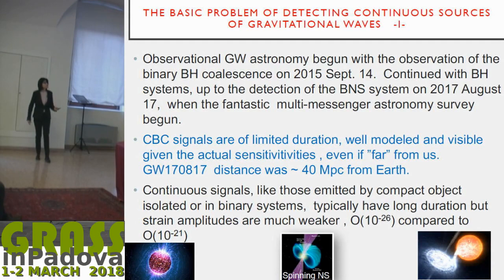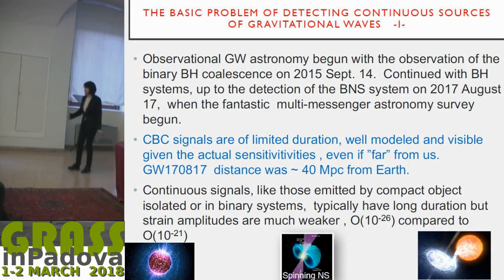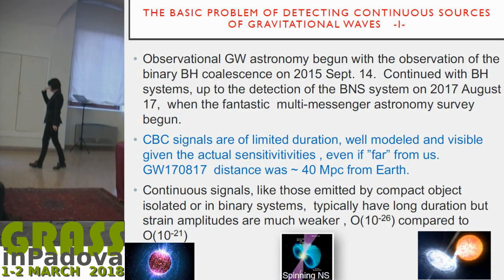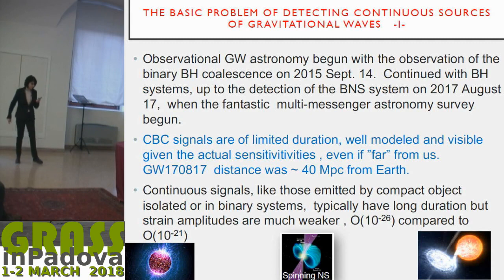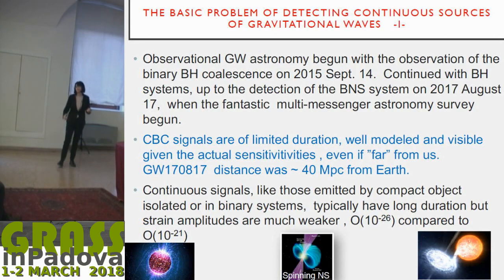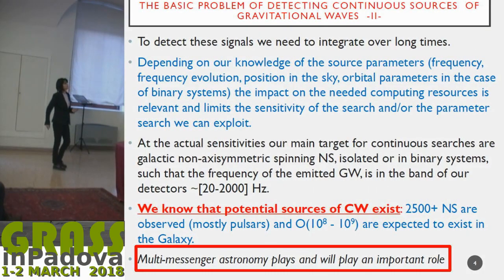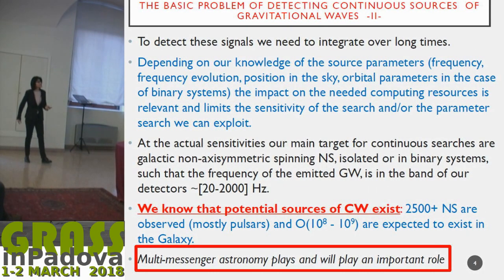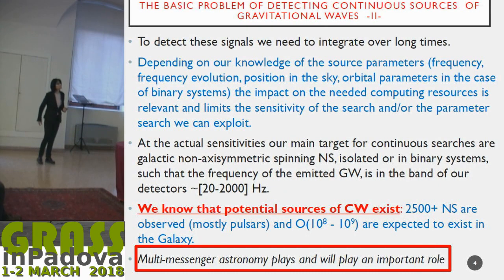A distance like 40 megaparsec, which is close enough for a detection if we have in mind compact binary coalescences, is very far for this kind of search. We are basically limited to our galaxy and nothing more. So the search needs huge computing resources.